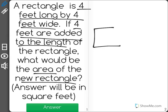Let's draw this. It says we start with a rectangle that is four feet by four feet. That's actually a square, which is a type of rectangle.